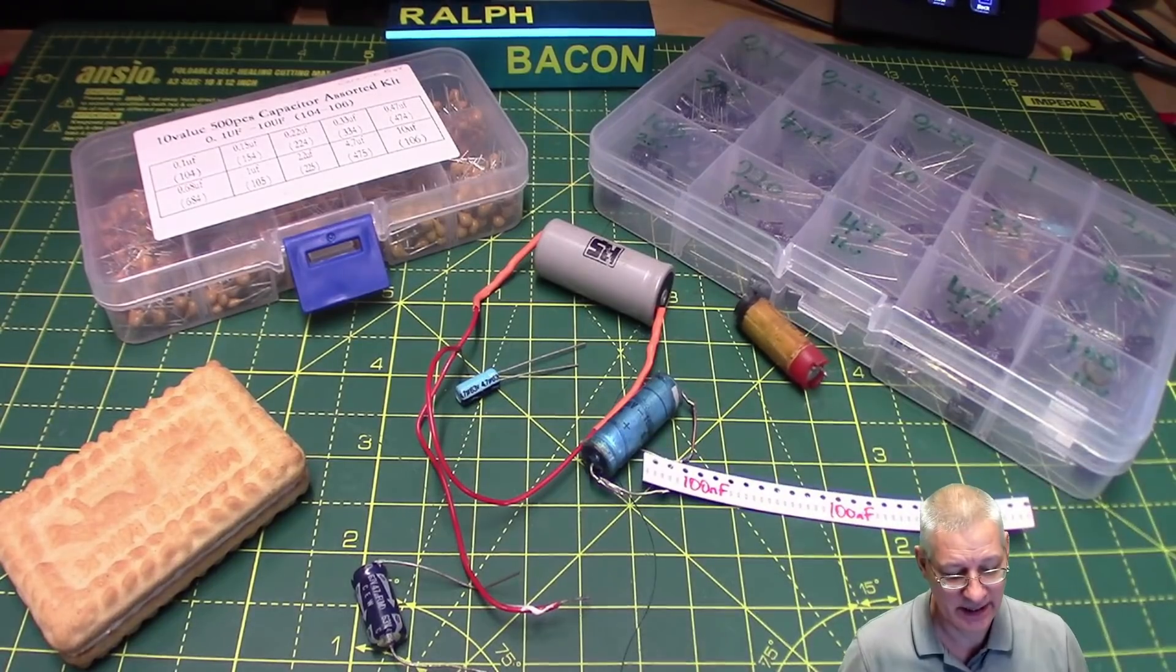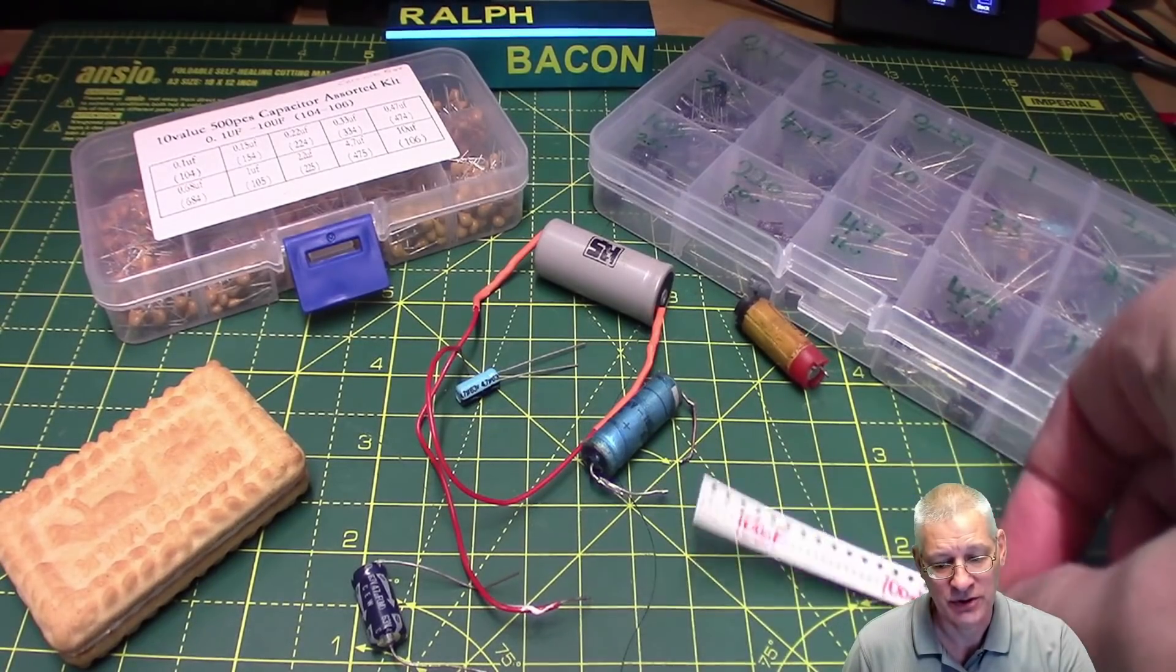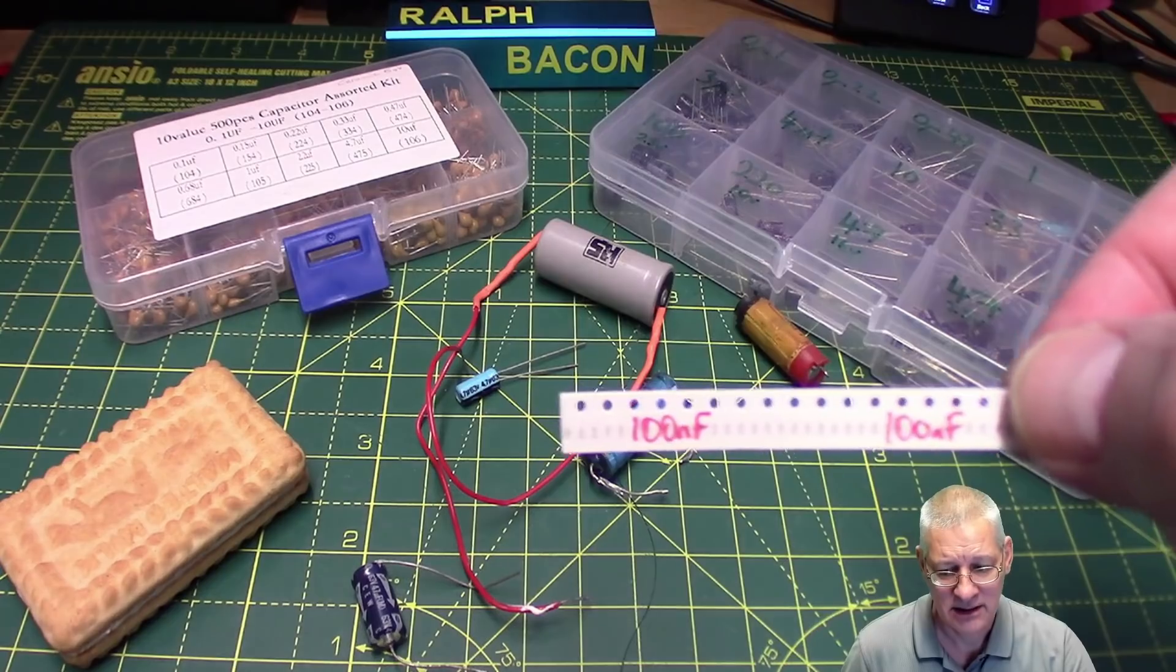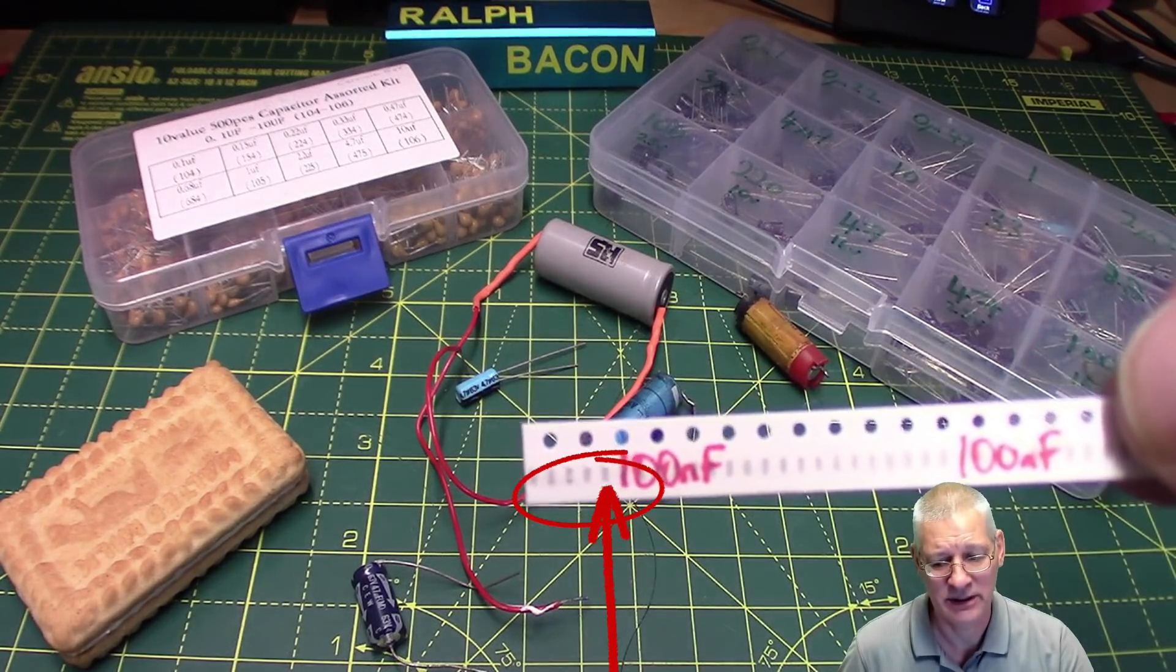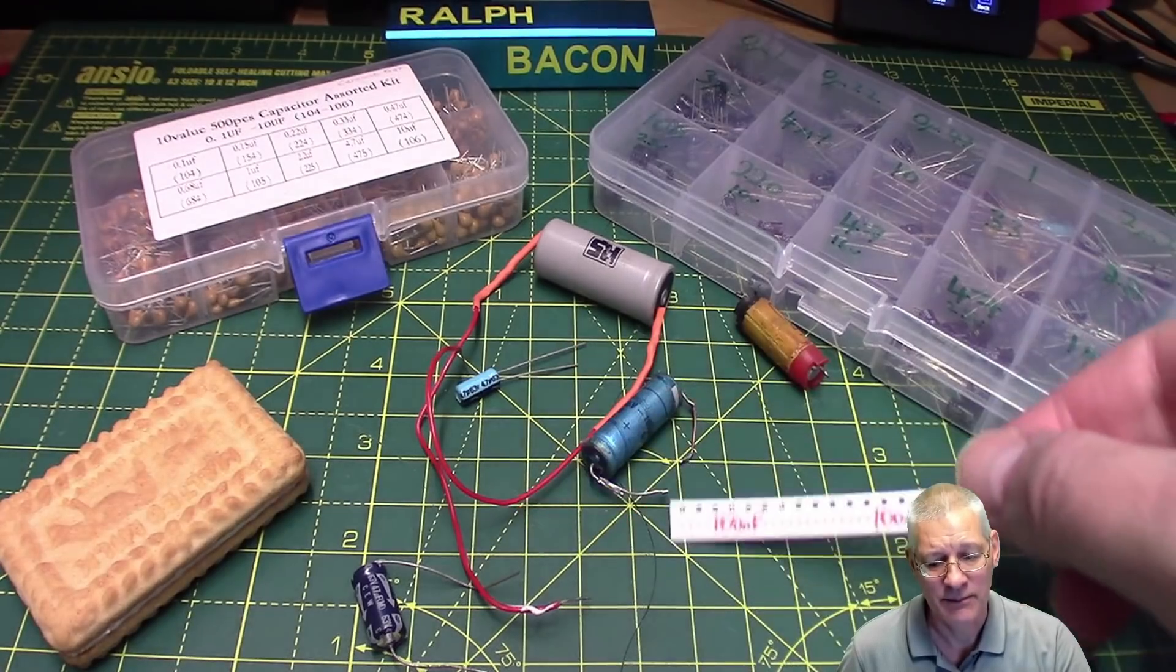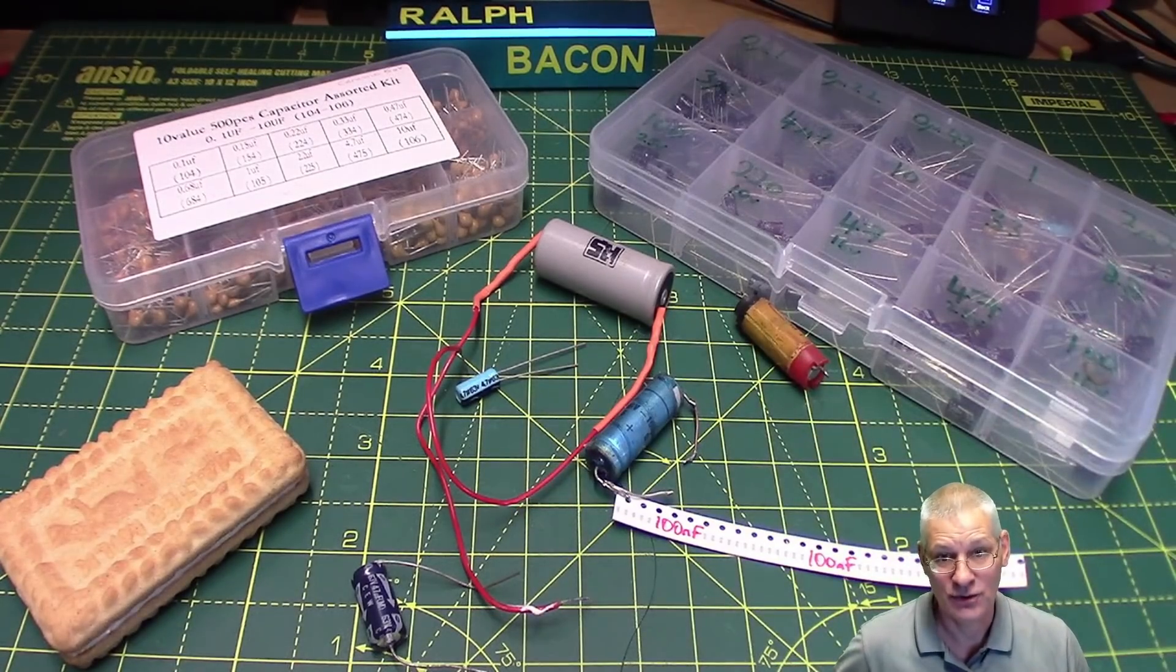And this little strip down here is what is an ultra-modern surface mount capacitor. In fact, it's so small that you really can't tell it, but it's that little black dot in the middle of each square. Tiny. Really easy to solder as well, not.